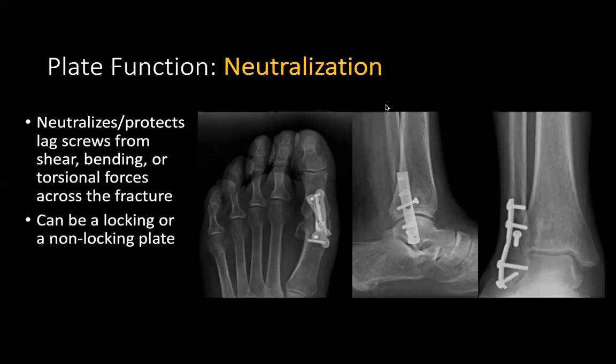The first plate function is neutralization — essentially neutralizing or protecting the lag screws from shear or bending forces. The lag screw is the driving force of reduction; the neutralization plate locks that position and provides extra support. Neutralization plates can be locking or non-locking, and many procedures use a combination of both for the same neutralization purpose.